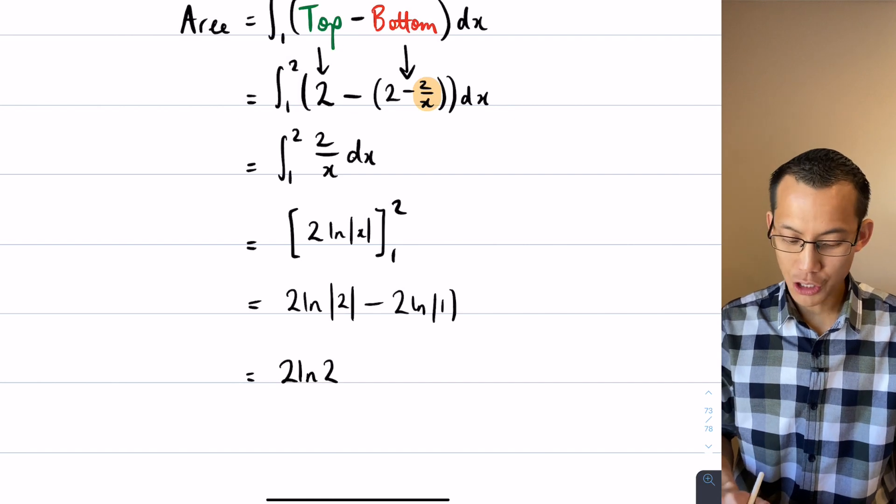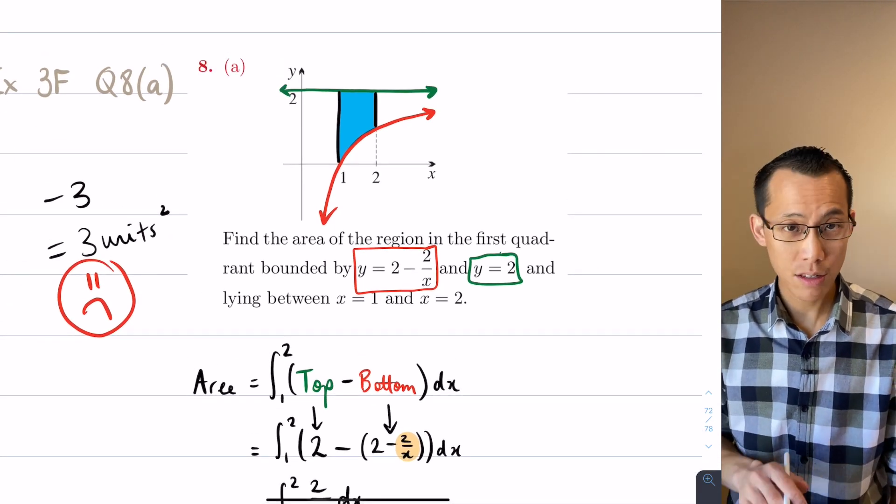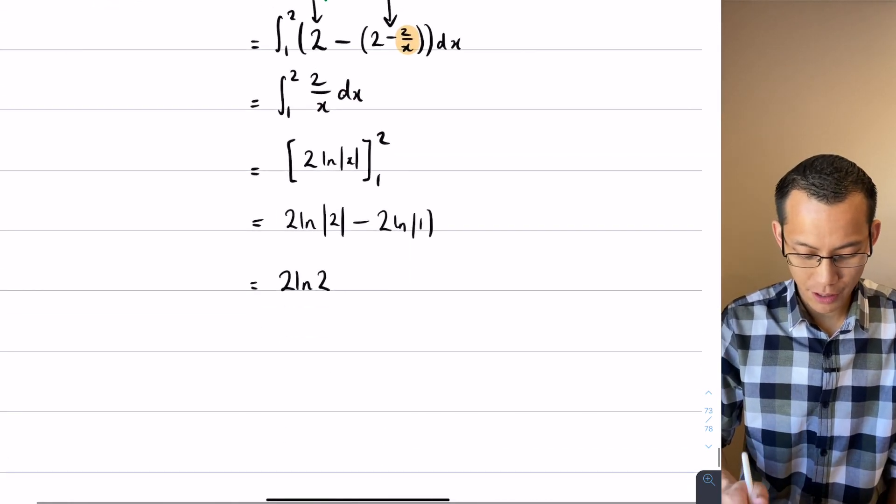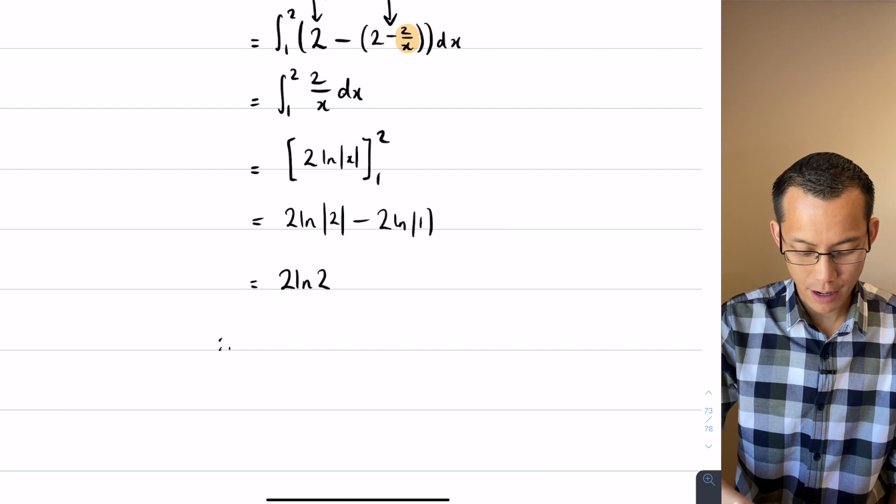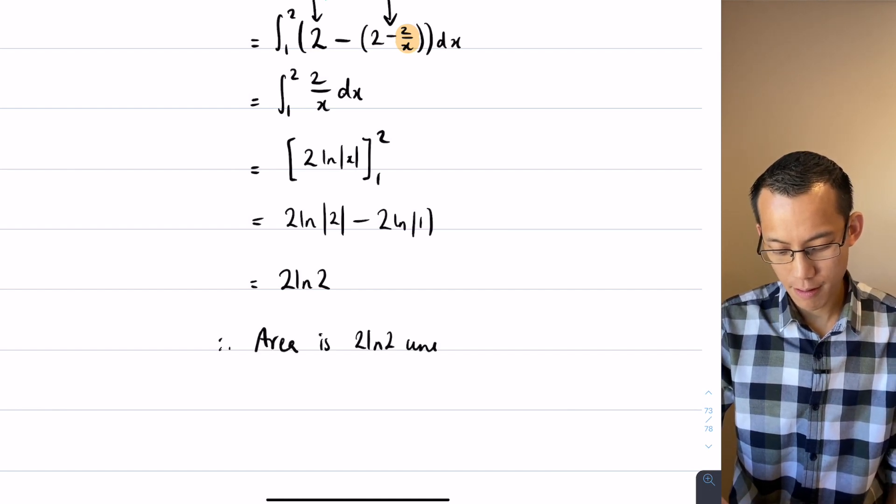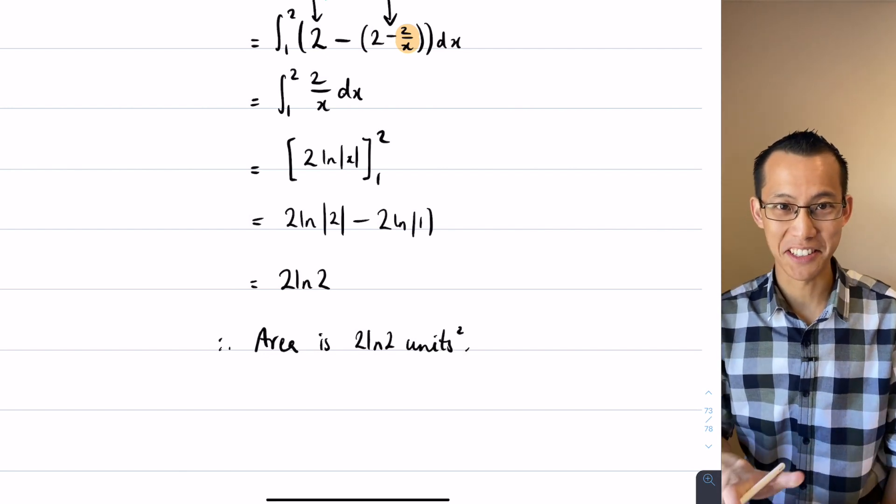I look back at the question—did they ask us to approximate in any way? And the answer is no, they didn't. So therefore I'm going to leave it exact as log of something. But I have said it's an area, so I'm going to say therefore the area is—I have my value, and now I put on my units, which in this case is square units. Donski.